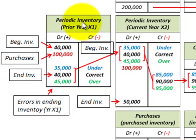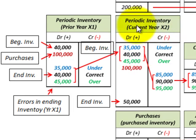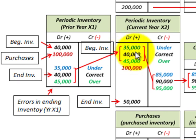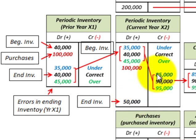Now let's look at inventory errors in the ending inventory account. We have an inventory account for prior year X1, and the ending inventory in X1 carries over to become beginning inventory in current year X2. Going back to the prior year ending inventory, we'll examine undervalued, correct, and overvalued inventory amounts. As it transfers to the current year, it becomes beginning inventory. We repeat the process: beginning inventory plus purchases of $100,000, minus ending inventory of $50,000, gives the inventory charge against sales.